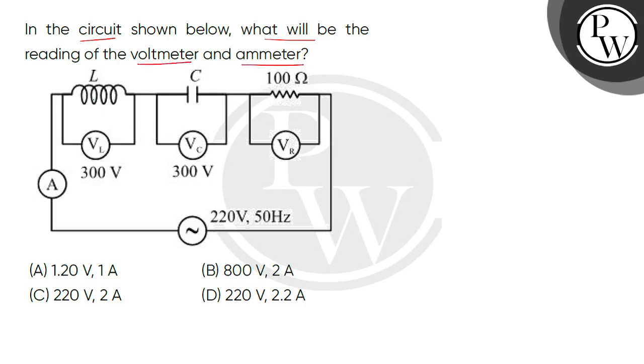Here the diagram shown is called a series LCR circuit. It has an inductor with voltage across it of 300 volts, capacitor with voltage 300 volts, and we need to find the resistance voltage.